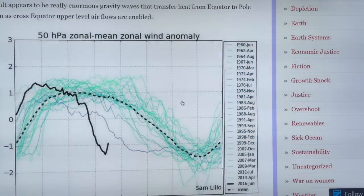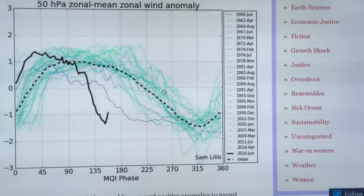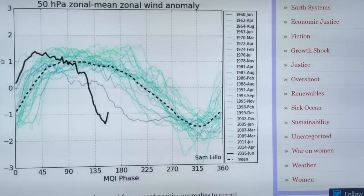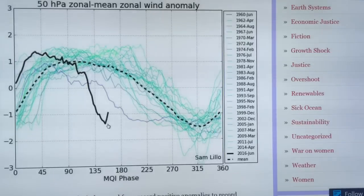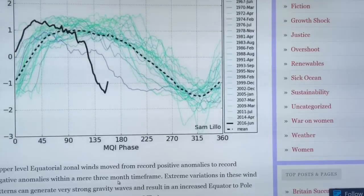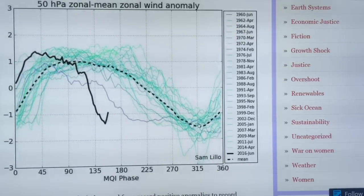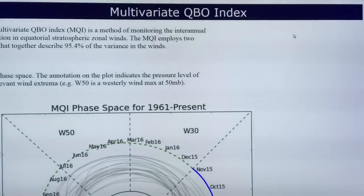Going back to Scribbler's blog, he posted an image showing what's called a zonal wind anomaly. This shows one sigma above normal, one sigma below, and so on. We went from a record maximum excursion in the positive direction to almost a record minimum in the negative direction. What is the MJO phase? Well, the relevant index here is the QBO — the Quasi-Biannual Oscillation — and I'll explain what that is quickly, because you need to know.